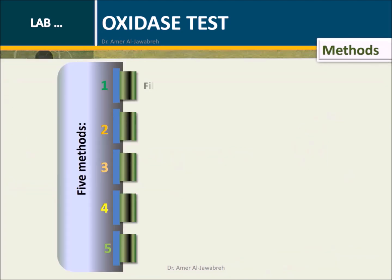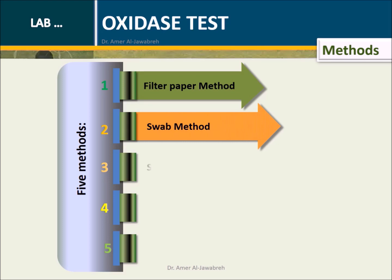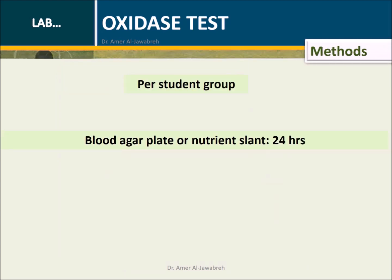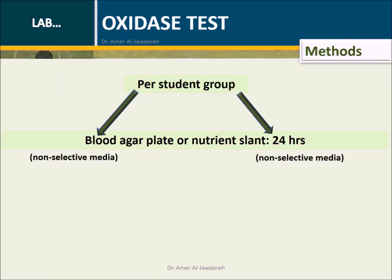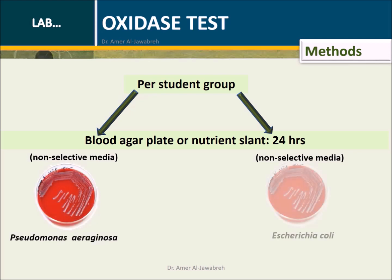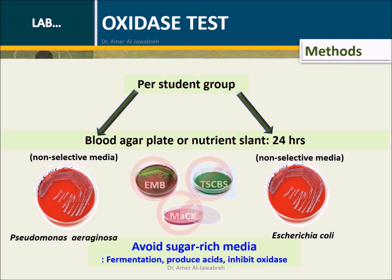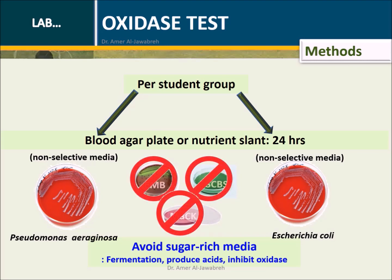Methods: Five methods — Filter paper, Swab, Strip, Tube, and Plate. Provide each student group with two culture plates: one for Pseudomonas aeruginosa and one for Escherichia coli. Avoid using sugar-rich media, as sugar will ferment, producing acids that will reduce pH, and thus inhibiting oxidase.